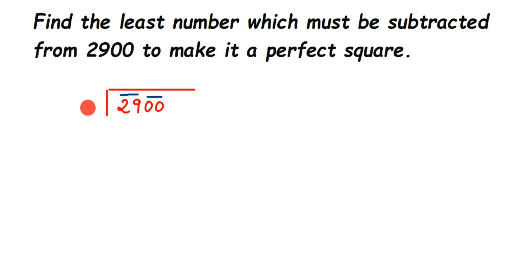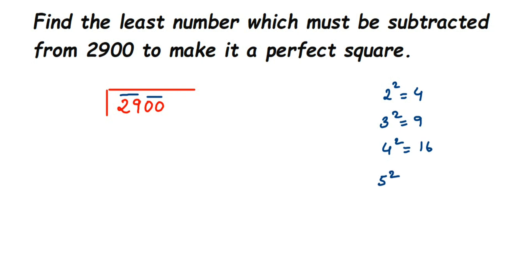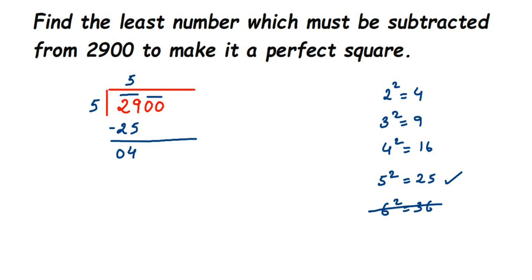To find the divisor, we select a number whose square is closest to 29. We know 2²=4, 3²=9, 4²=16, 5²=25 (close to 29), and 6²=36 (greater than 29). So we take 5. Here we write 5, and 5²=25. We subtract: 29 minus 25 gives remainder 0. Now we drop down the next pair, which is 00.